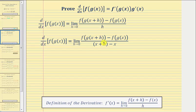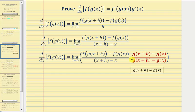Now we're going to create an equivalent fraction by multiplying by a fraction equal to one. For this proof, we're going to multiply by this fraction, which is equal to one as long as g of the quantity x plus h doesn't equal g of x — otherwise we'd have the indeterminate form of zero divided by zero. So because we're multiplying by one, this gives us an equivalent fraction.